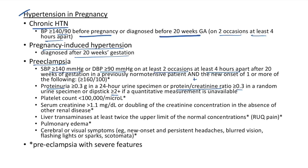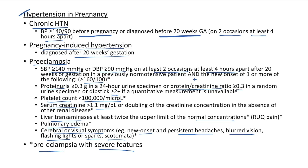Additional criteria for preeclampsia: platelet count <100,000/μL, serum creatinine >1.1 mg/dL or doubling of creatinine in absence of other renal disease, liver transaminases at least twice the upper limit of normal, pulmonary edema, and cerebral or visual symptoms such as new onset persistent headaches, blurred vision, flashing lights, and scotoma. For preeclampsia with severe features, BP must be ≥160/110 mmHg or platelet count <100,000/μL.